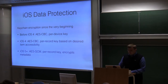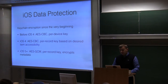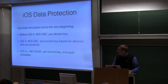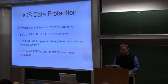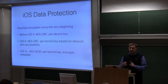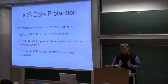iOS 5 modified keychain encryption further. It switched from AES CBC mode to GCM — Galois counter mode — which is authenticated encryption, a very good step. Encryption keys remained per-item random keys. Another major improvement was that beginning with iOS 5, not only passwords themselves but also all metadata associated with keychain items — such as login name, server name, creation date, modification date — is also encrypted.